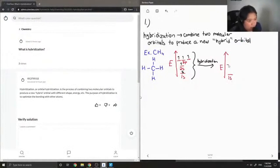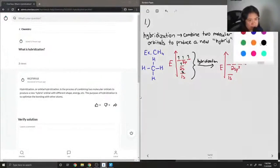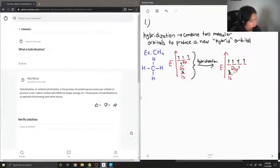We have 2sp3 and here you can see all the electrons are at the same energy level. Okay so let me write out why this is.